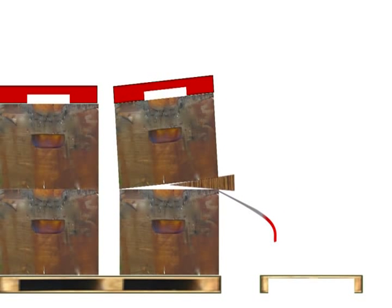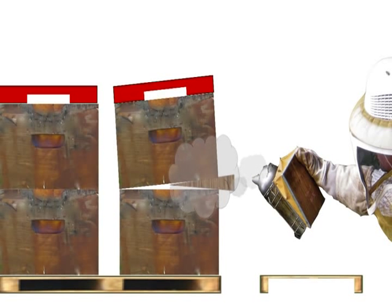Tilt the upper hive body back to expose the space and use the smoke to calm the bees. Do not smoke in excess as this can cause the bees to run.